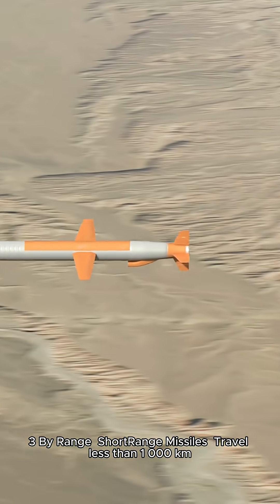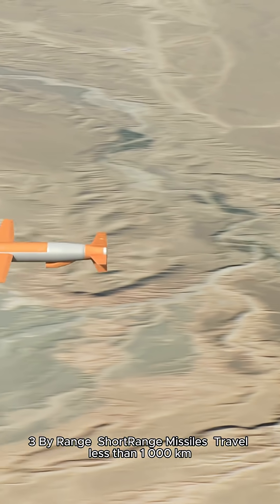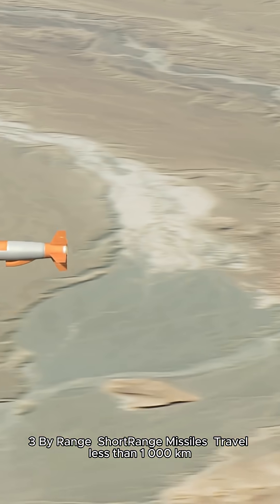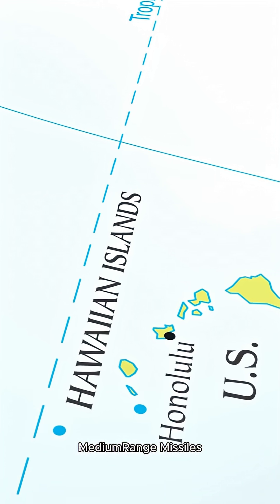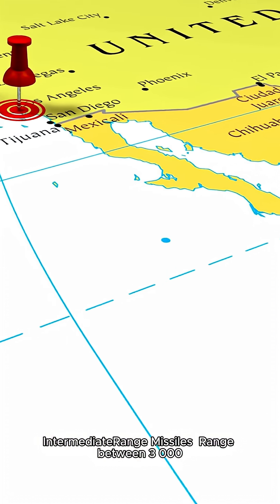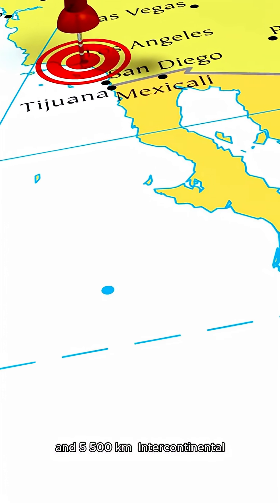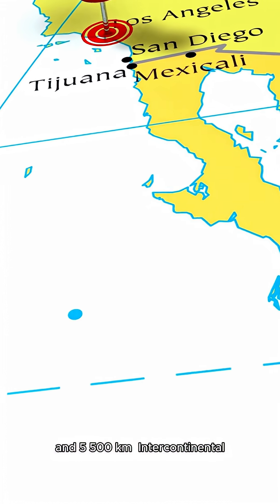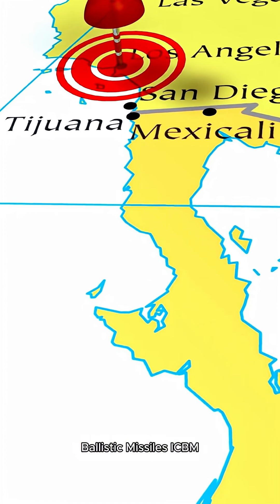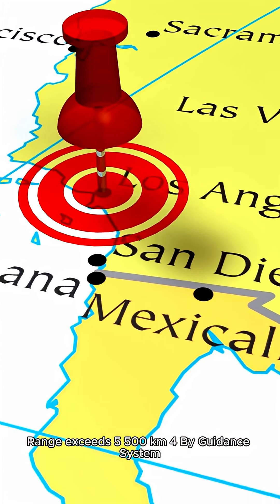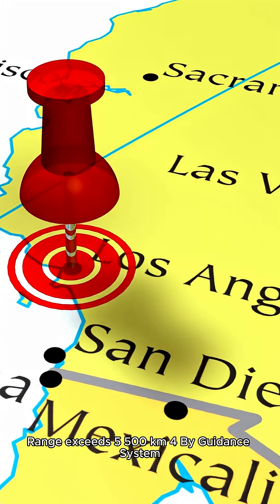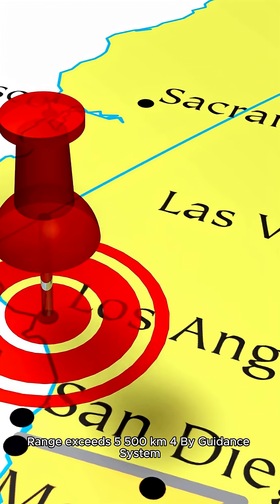By range: short-range missiles travel less than 1,000 kilometers. Medium-range missiles cover between 1,000 and 3,000 km. Intermediate-range missiles cover between 3,000 and 5,500 km. Intercontinental ballistic missiles (ICBMs) have a range that exceeds 5,500 kilometers.